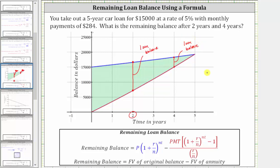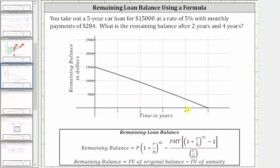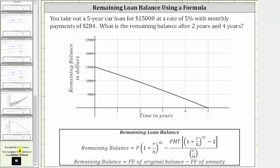Another way would be to graph the entire formula, where the y-values represent the declining loan balance. Because it's a five-year loan, notice after five years the balance is zero because the loan is paid off. I hope you found this helpful.